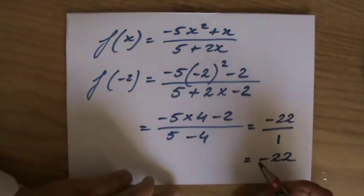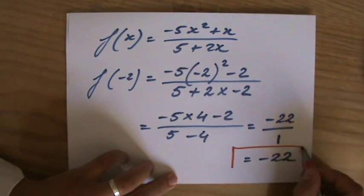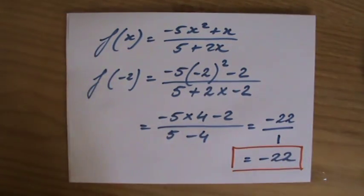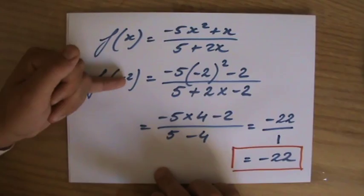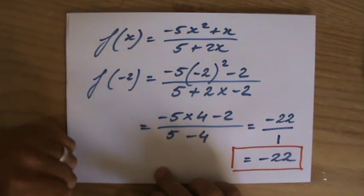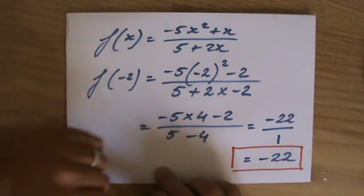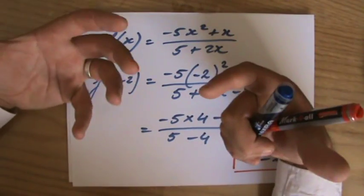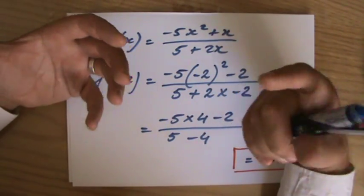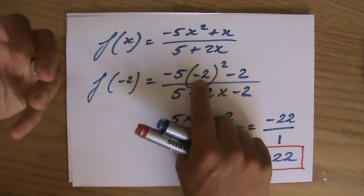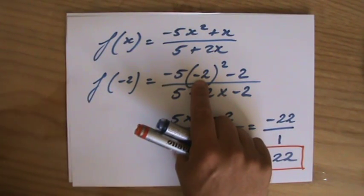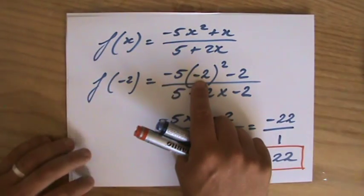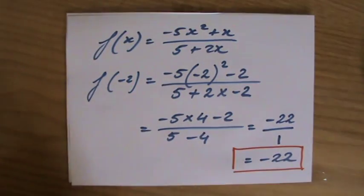Now, you can check that on your calculator. I just want to stress again that if you have a negative number, you're evaluating it for a negative x, and you have a square there somewhere, put brackets in your calculator when you square it, or use your brain and realize that minus 2 times minus 2 is a positive 4, and not a negative 4. Okay, I'll see you at the next part.